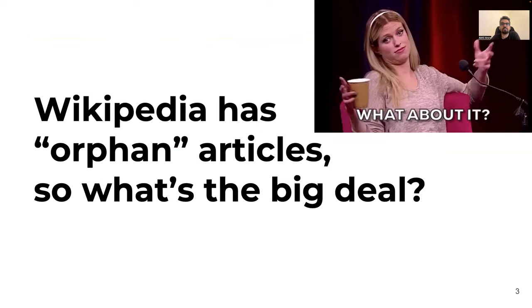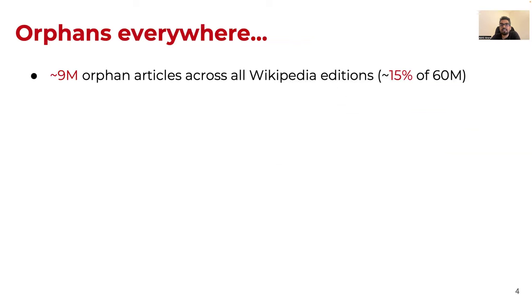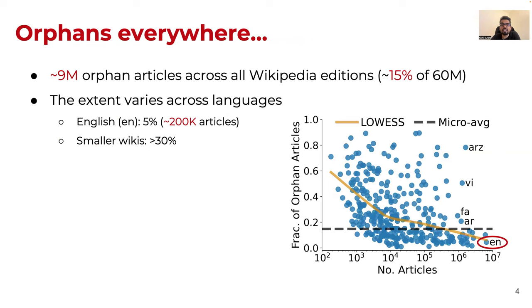Let me address the elephant in the room. So Wikipedia has orphan articles, but what's the big deal? The big deal is that we find the existence of around 9 million orphan articles, which amounts to a whopping 15% of all Wikipedia articles. As shown in the plot, the orphan rate in English Wikipedia is only 5%, which is relatively small if you look at the relative numbers, but this still amounts to 200,000 articles in absolute terms, which is a lot.